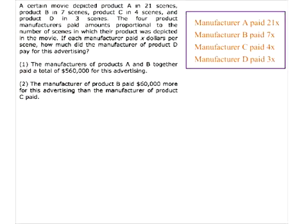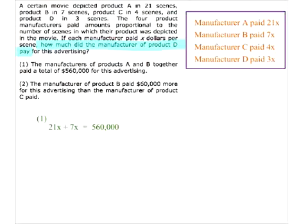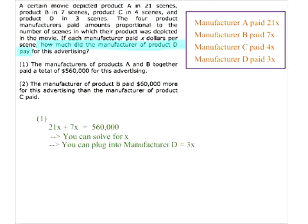Statement one: the manufacturers of product A and B together — so the total of 21x and 7x is 560,000. Remember, your goal is to find how much did the manufacturer of product D pay. We have x if we have this equation. You don't actually have to solve for it — you can just say you can solve for x. And once you have x, you can plug into manufacturer D, which spent 3x. That means you're going to have a number for this, so this is sufficient.